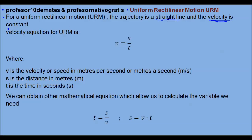The velocity equation for the Uniform Rectilinear Motion, URM, is v equals s divided by t. Where v is the velocity or speed in meters per second, or meters a second—you can say either.